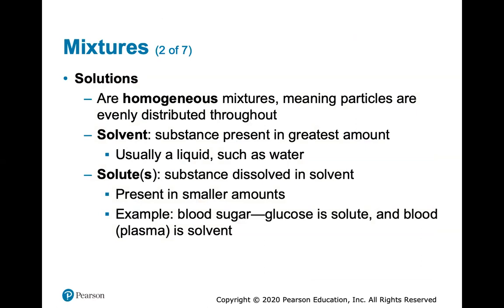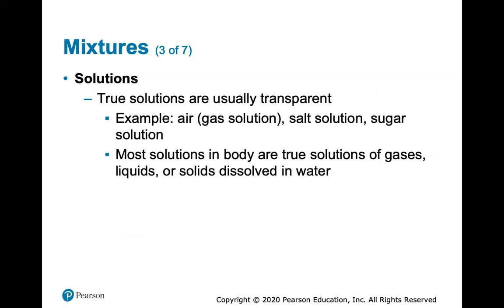Solutions are homogeneous mixtures, meaning particles are evenly distributed throughout. The solvent is the substance present in the greatest amount — usually a liquid; water is often called the universal solvent. The solute is the substance being dissolved, present in smaller amounts. For example, in blood sugar, glucose is the solute and blood plasma is the solvent. True solutions are usually transparent — like air, a salt solution, or sugar water. Most solutions in the body are true solutions of gases, liquids, or solids dissolved in water.